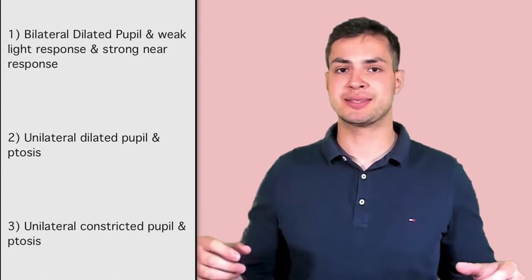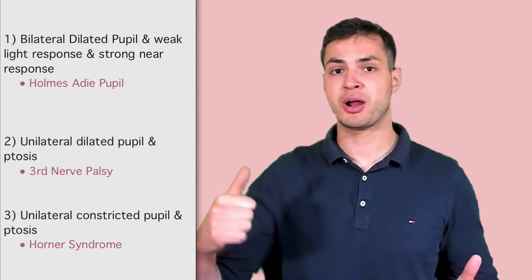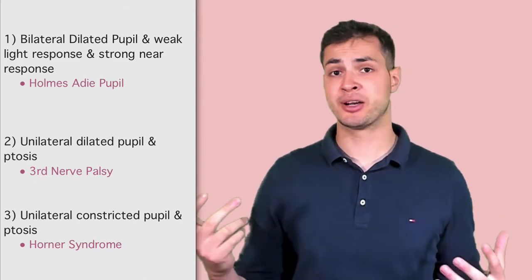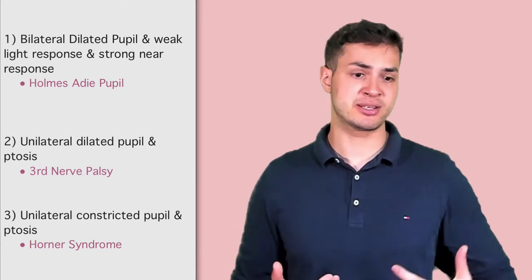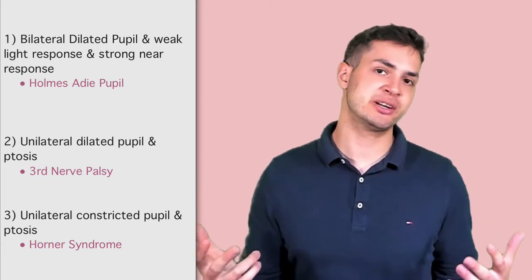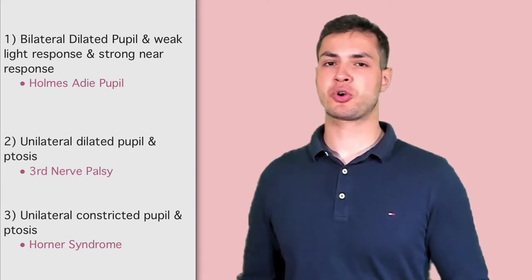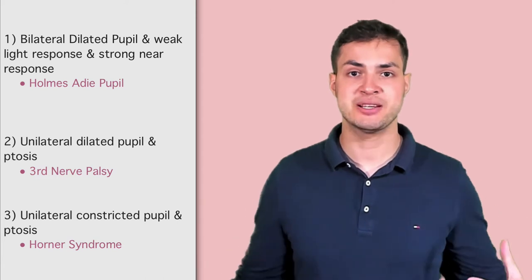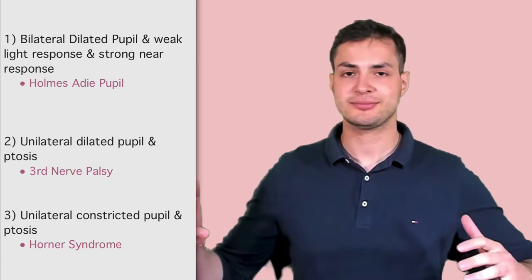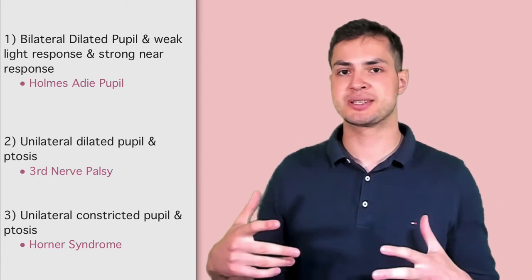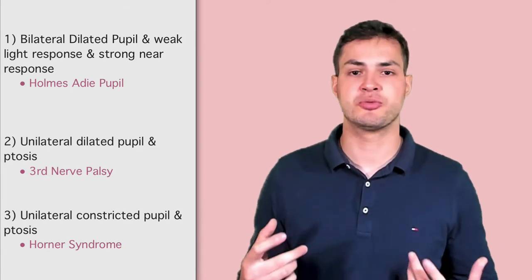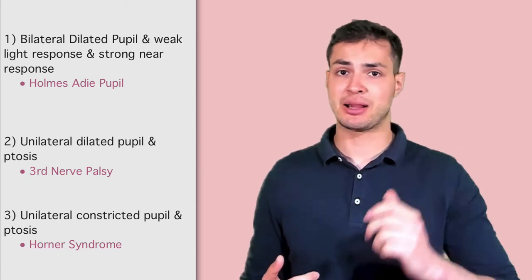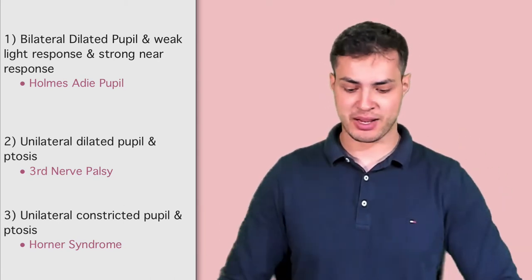The answer to number 1 is Holmes-Adie pupil — we'll cover that in Part 4 of the series. Number 2, dilated pupil and ptosis, that's third nerve palsy. Remember there are surgical causes such as a posterior communicating artery aneurysm, and medical causes more commonly such as atherosclerosis. And number 3, ptosis and a constricted pupil is Horner's syndrome. Remember the four features of Horner's syndrome are ptosis, miosis, anhydrosis, and enophthalmos.